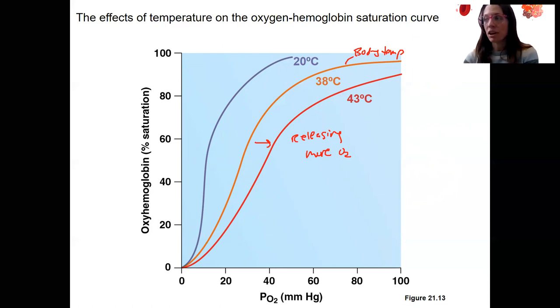One of those to make sense of, right? Anything where you're going to want to have more oxygen delivery occur is going to be a shift right, which means resulting in releasing more O2. Opposite, release less.